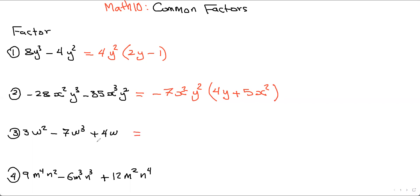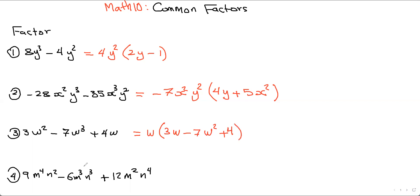In this example, looking at the numbers 3, 7, and 4, there is no greatest common factor — no single number goes into all three. For the w terms: w², w³, and w (which is w to the 1), the only thing we can take out is w. So: 3w² divided by w gives 3w, minus 7w³ divided by w is w², plus 4, and w divided by w cancels to give 1.